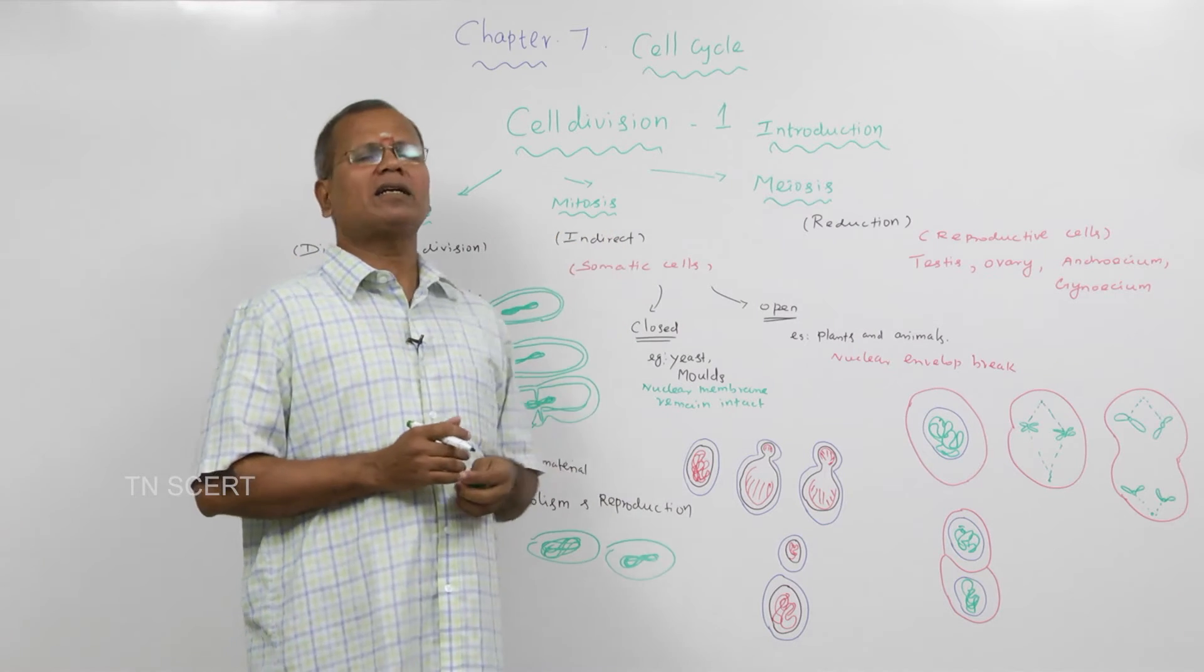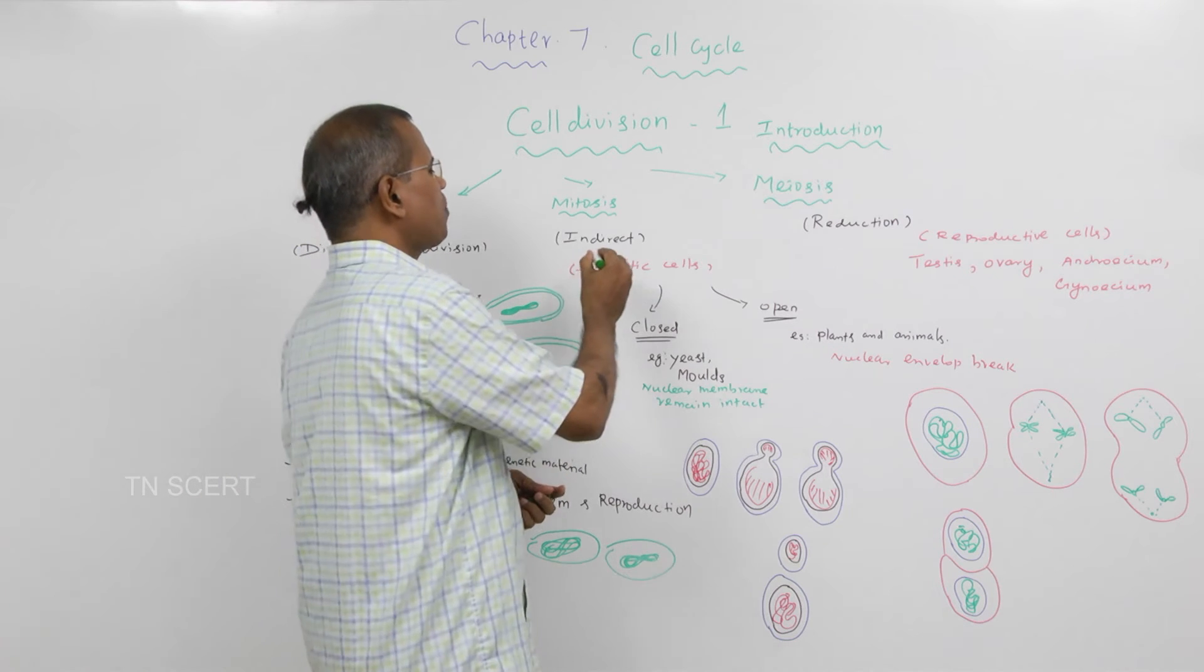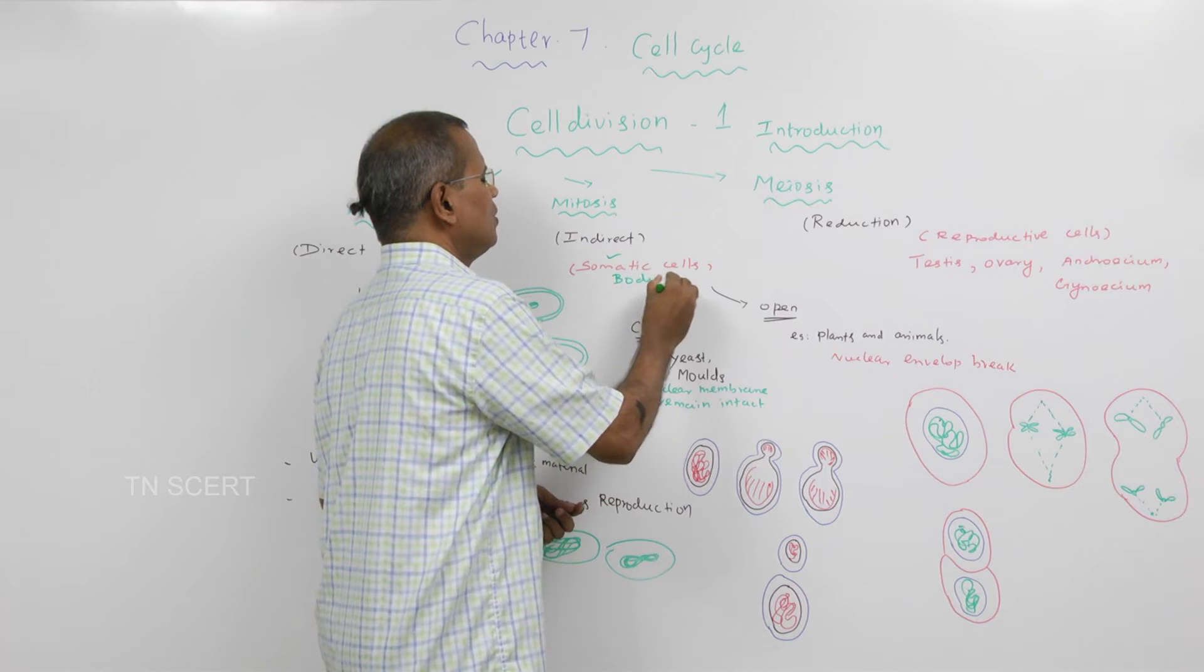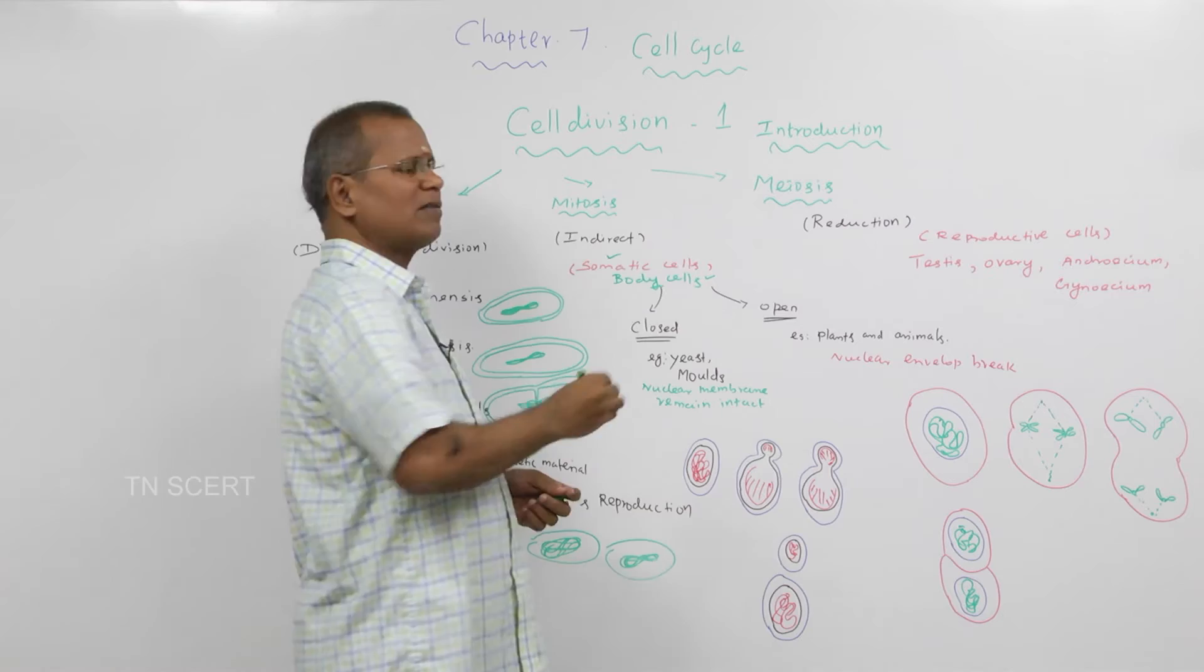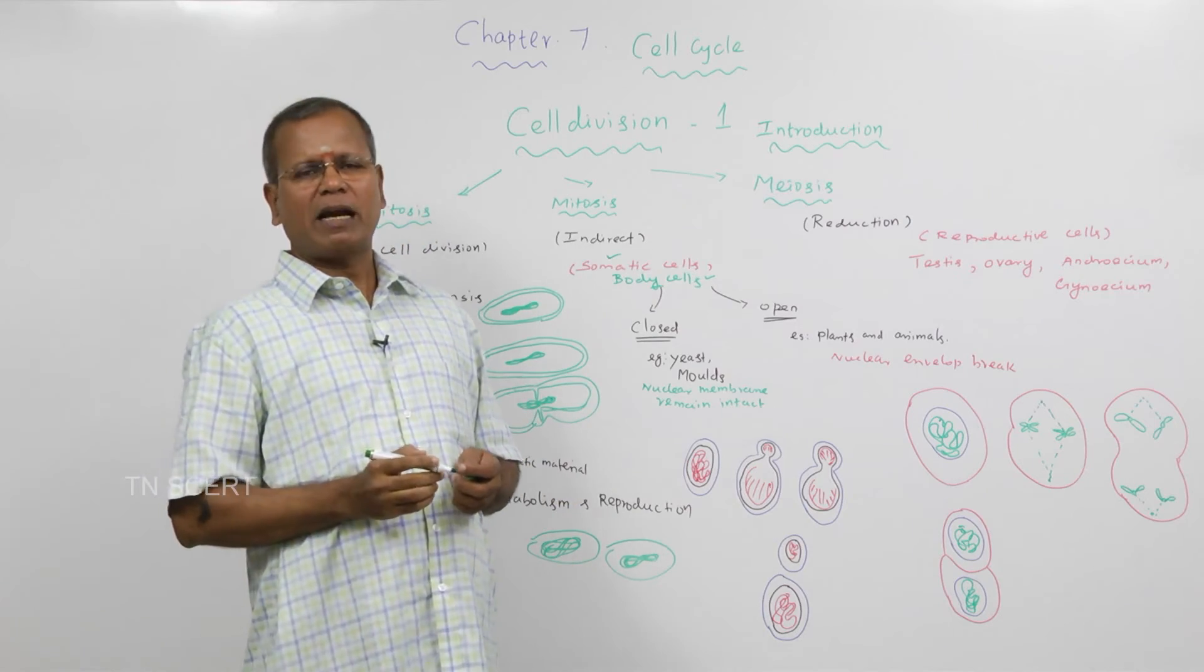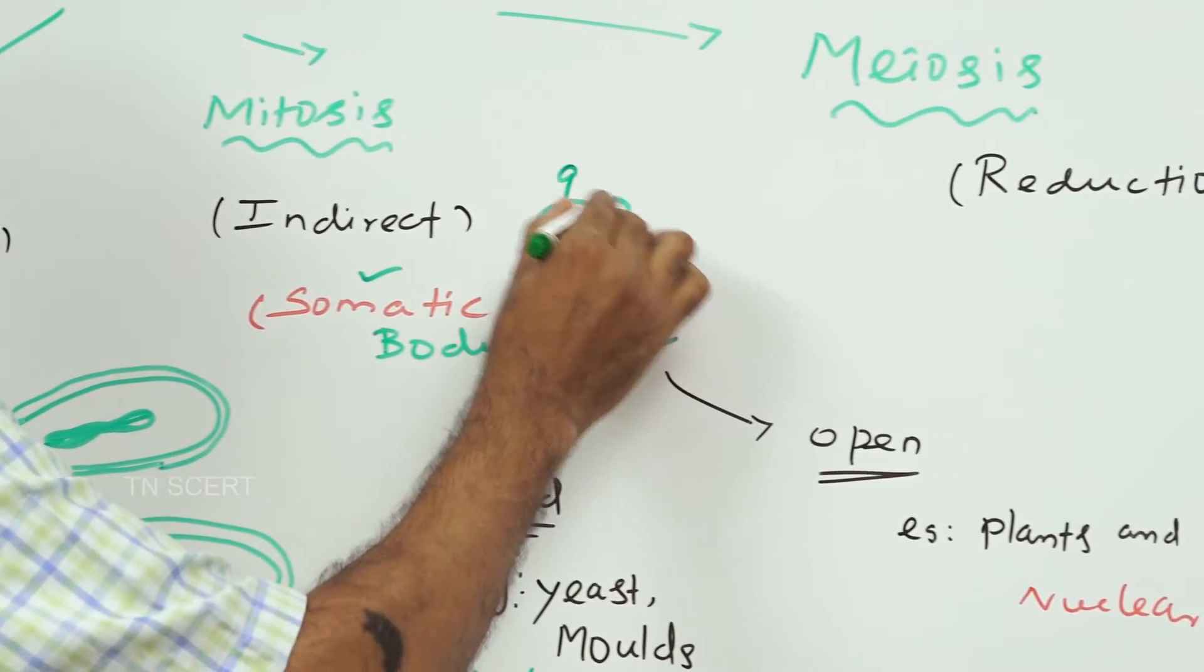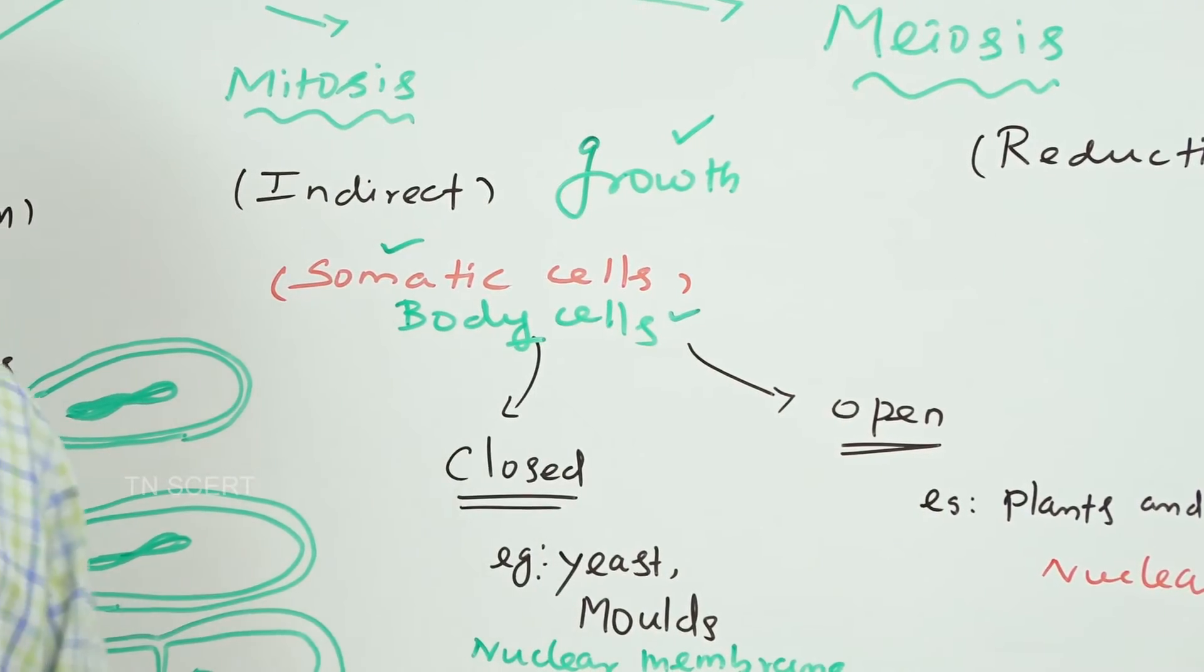Mitosis, the indirect cell division responsible for growth in organisms, takes place in the somatic cells or in the body cells. This cell division is responsible for growth in organisms.